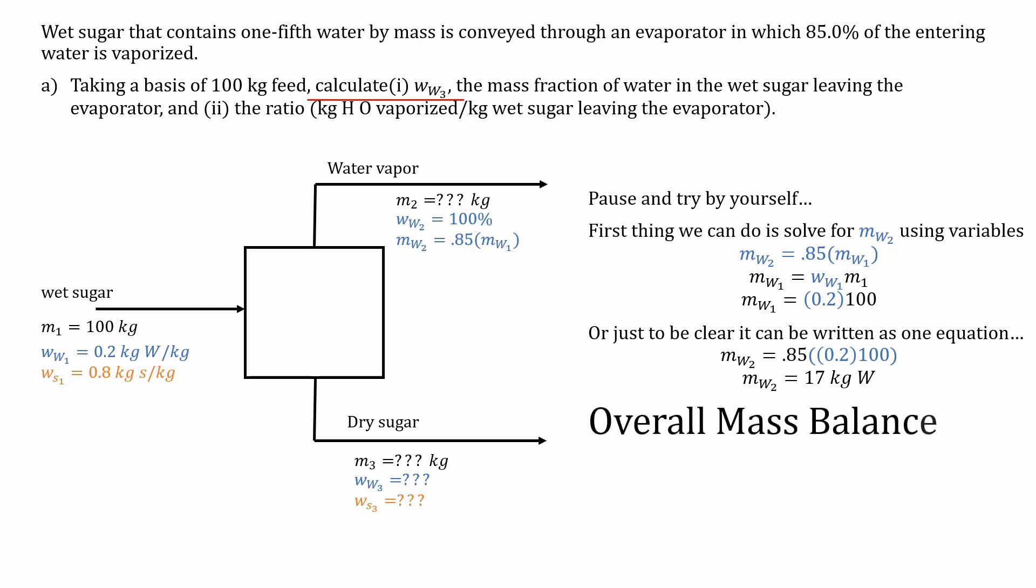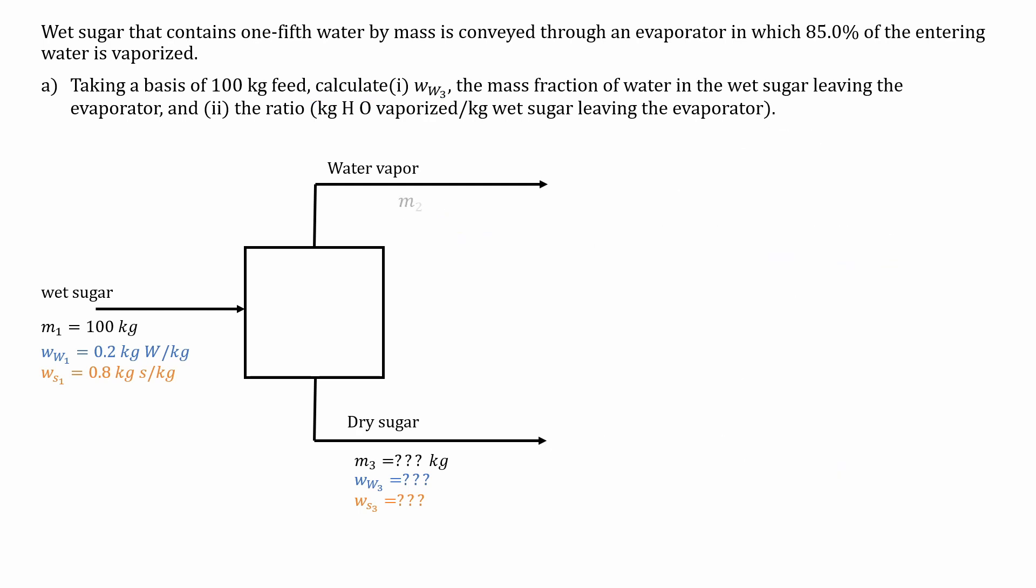The next thing we can do is the overall mass balance. When in doubt, n equals out. Adding up the streams, we have M1 is equal to M2 plus M3. And we can replace the variables for our calculation. Since we solve M2 to be 17, we can plug this into our overall mass balance equation and get an answer of 83 kg.